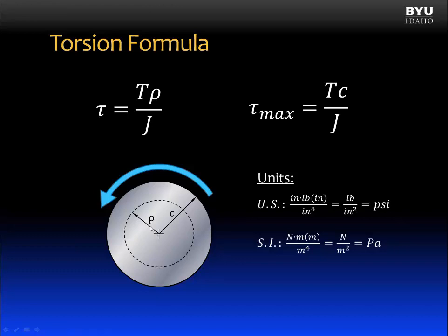The maximum shear stress occurs when rho is at its largest. Rho is at its largest on the exterior surface of the shaft. Or in another case, when rho is equal to the radius, which we call C. And C was the term we used for radius in the equation for the polar moment of inertia.